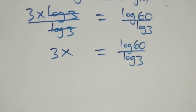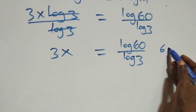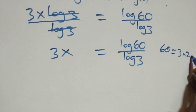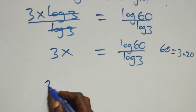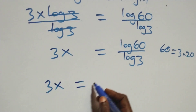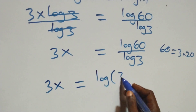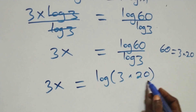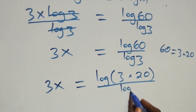From here, sixty can be written as three times twenty, and what we have becomes three x equals log of three times twenty over log three.